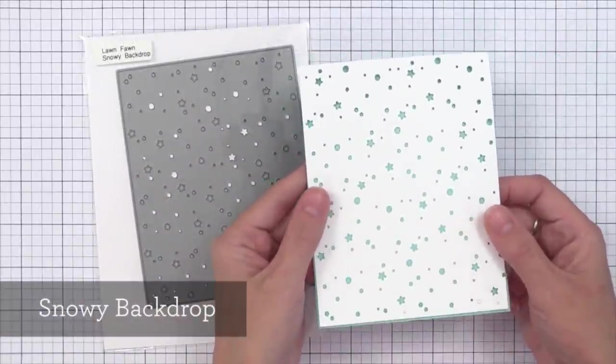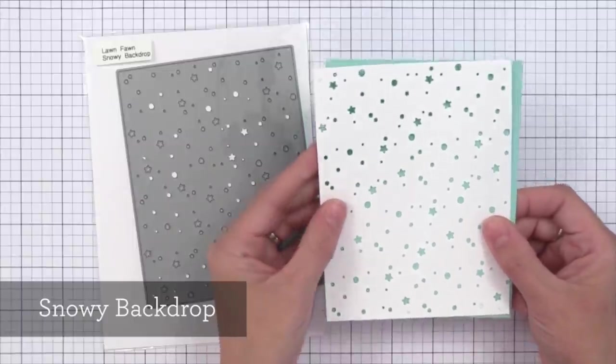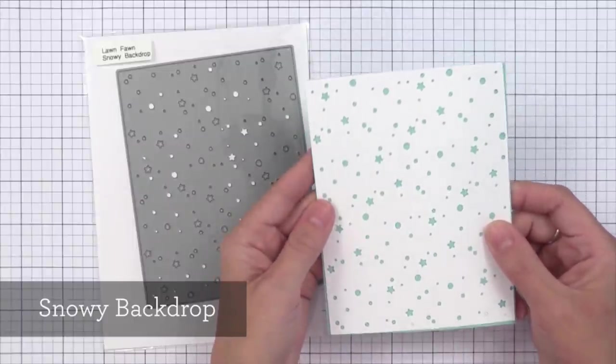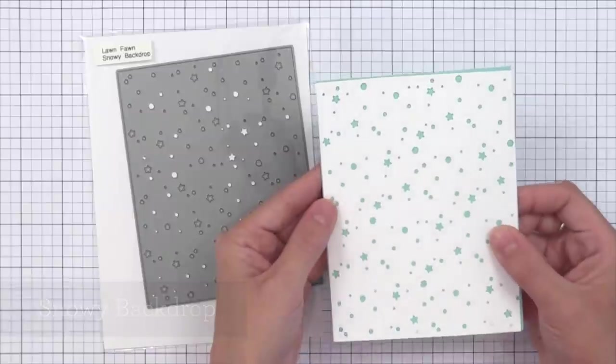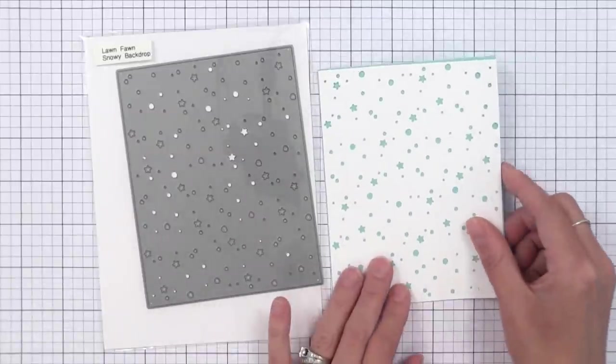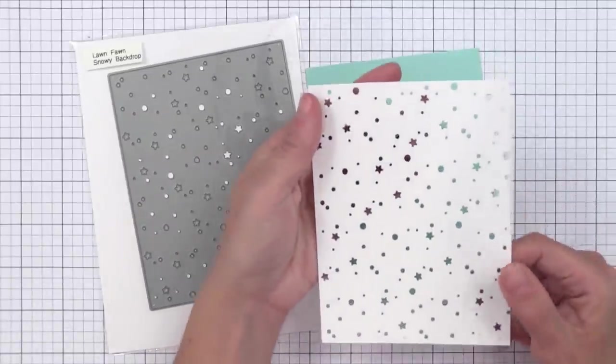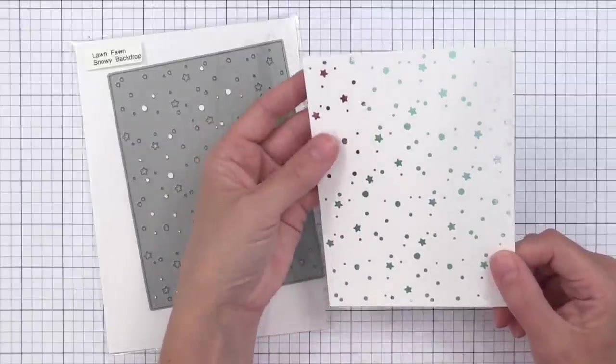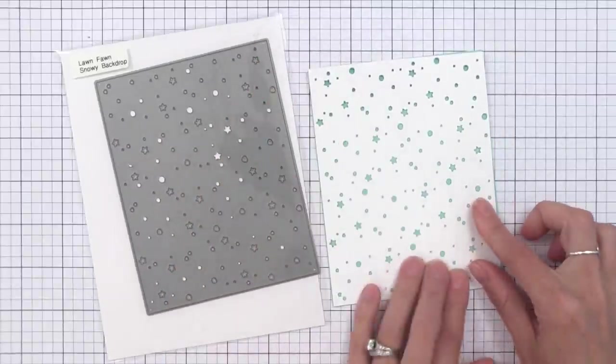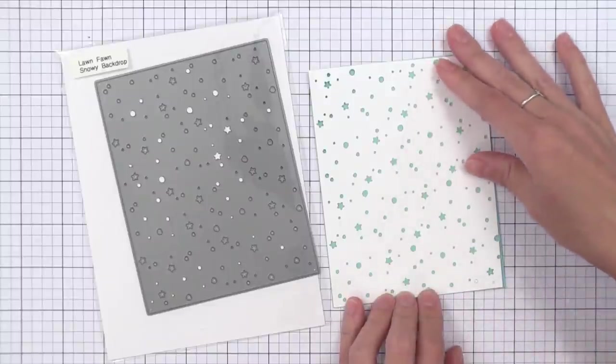The snowy backdrop die is similar to the stamp I showed you earlier. This die cuts a four and a quarter by five and a half inch piece with all those little stars and dots so you can put this on the front of the note card and just allow a little bit of color to show through. Lots of fun techniques that you can do with this and you could even use this as a stencil and put embossing paste over it.